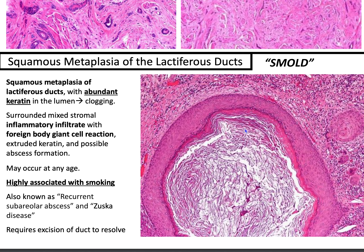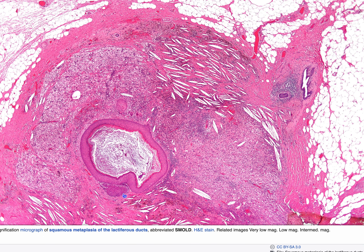Last but not least, SMOLD — squamous metaplasia of the lactiferous ducts. Remember, the body does not like keratin when it's in the dermis. You're going to have clogging, and because the body treats it like a foreign substance, there'll be an inflammatory infiltrate with foreign body giant cell reaction, extruded keratin, and possible abscess formation. It's highly associated with smoking. In order for this to resolve — because it can recur — you have to excise the duct. It may occur at any age.